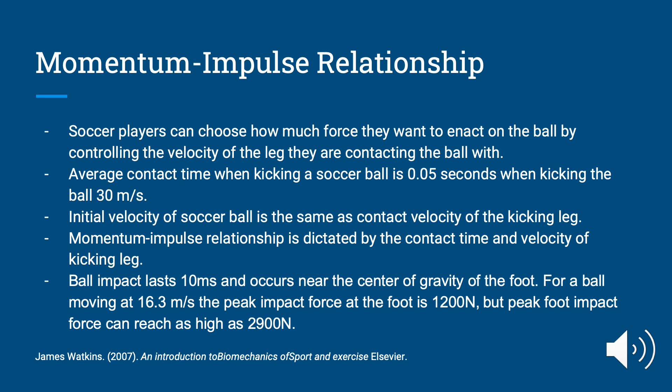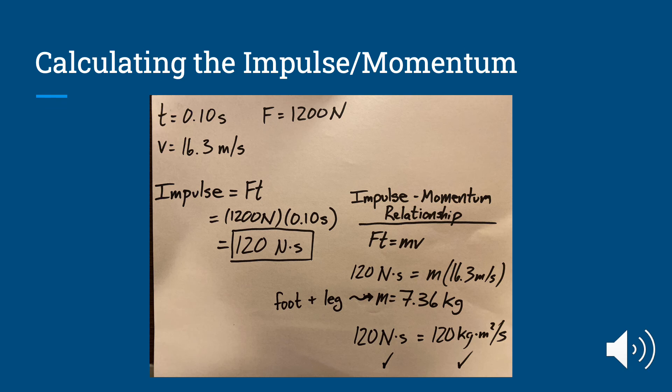Now we're going to do a sample problem using these numbers. To calculate the impulse, we did force times time: 1,200 newtons times 0.1 seconds to get 120 newton-seconds. Using the impulse-momentum relationship — F times t equals mv — we set mv equal to the impulse of 120 newton-seconds and used the velocity of 16.3 meters per second, showing that the relationship is equal between impulse and momentum.